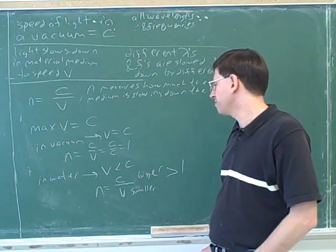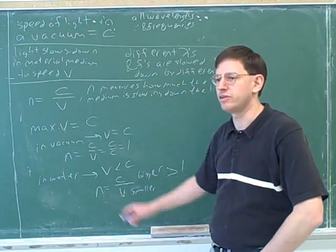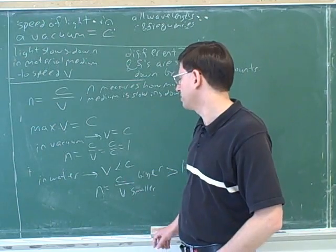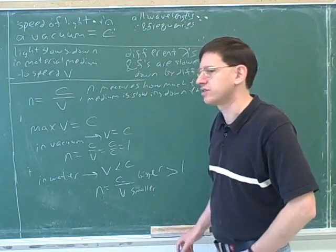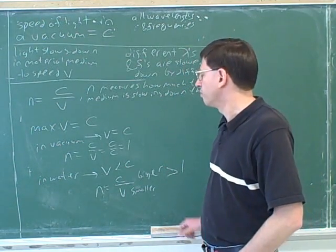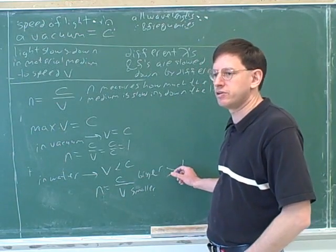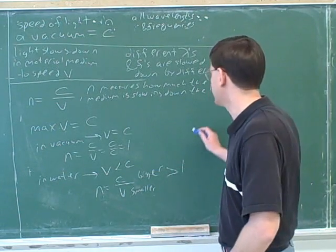Because any time, remember N tells you how much you're getting slowed down. Well, everything, if you're not in a vacuum, you're always getting slowed down more than the vacuum. So what does it mean when N is 1? It means you're not being slowed down at all. Maybe this is another way to put it.